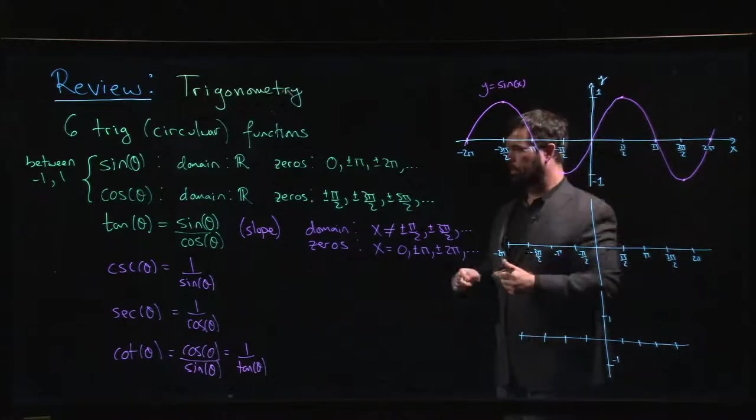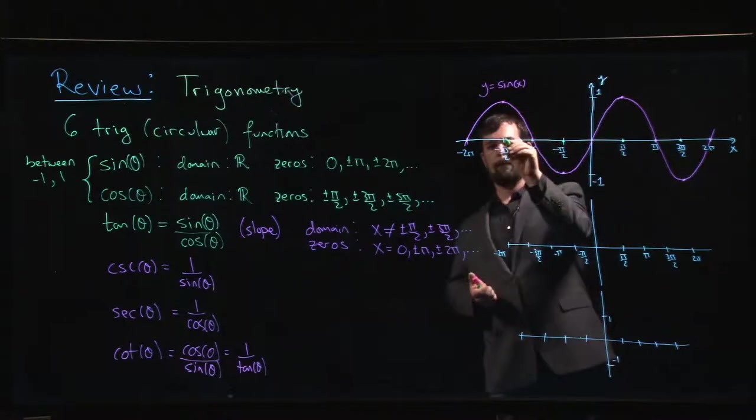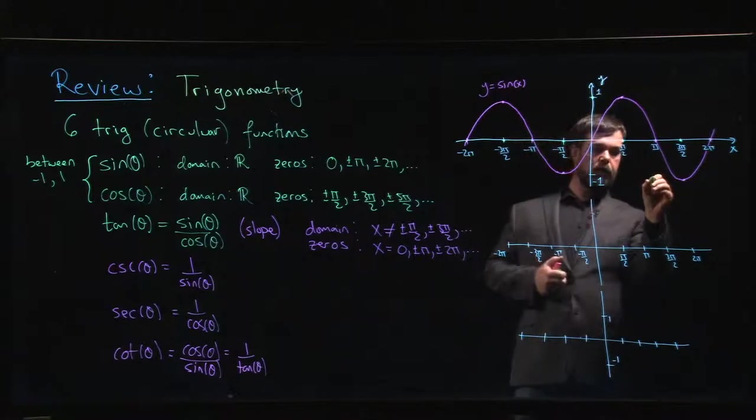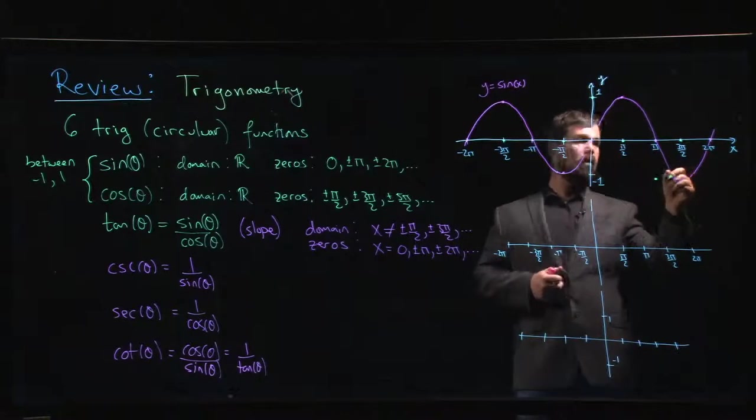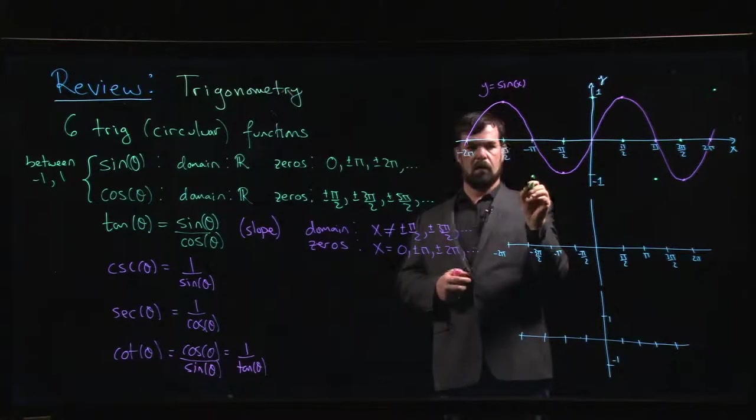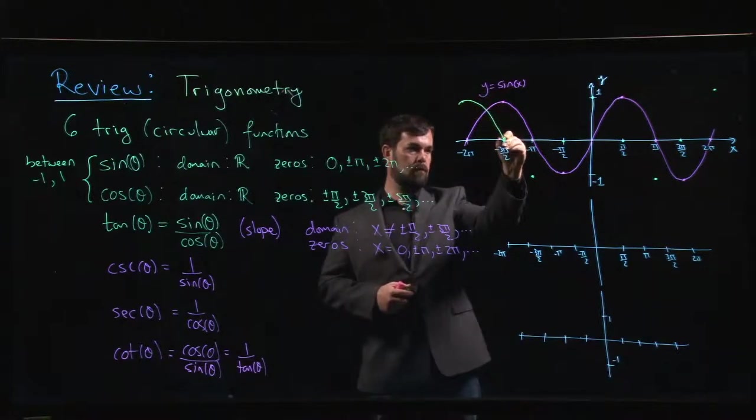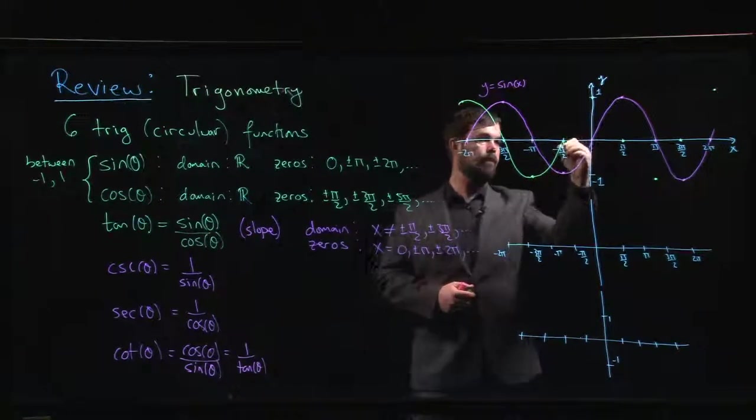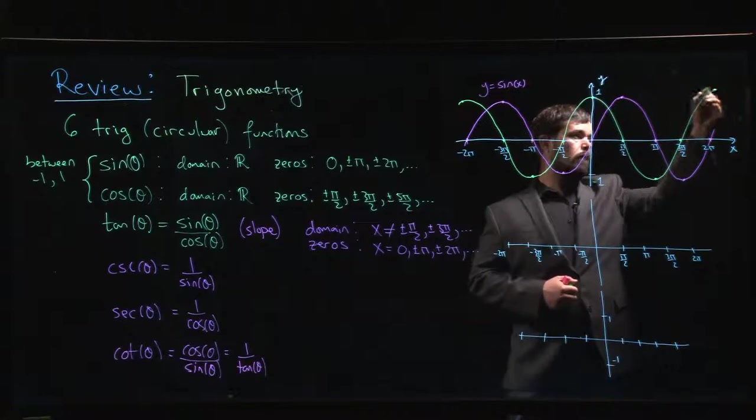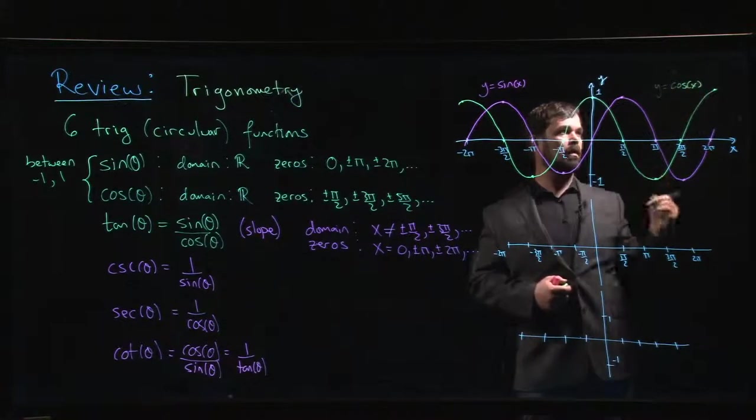All right? On the same set of axes, we can plot cos. All right? So cos has its zeros at the odd multiples of pi over 2. Cos of 1, or cos of 0, rather, is equal to 1. Cos of pi is negative 1. At 2 pi, we're back up to plus 1. Okay? And the cosine graph goes in much the same as the sine graph. Okay? Like that. Okay? So that's y equal to cos x.